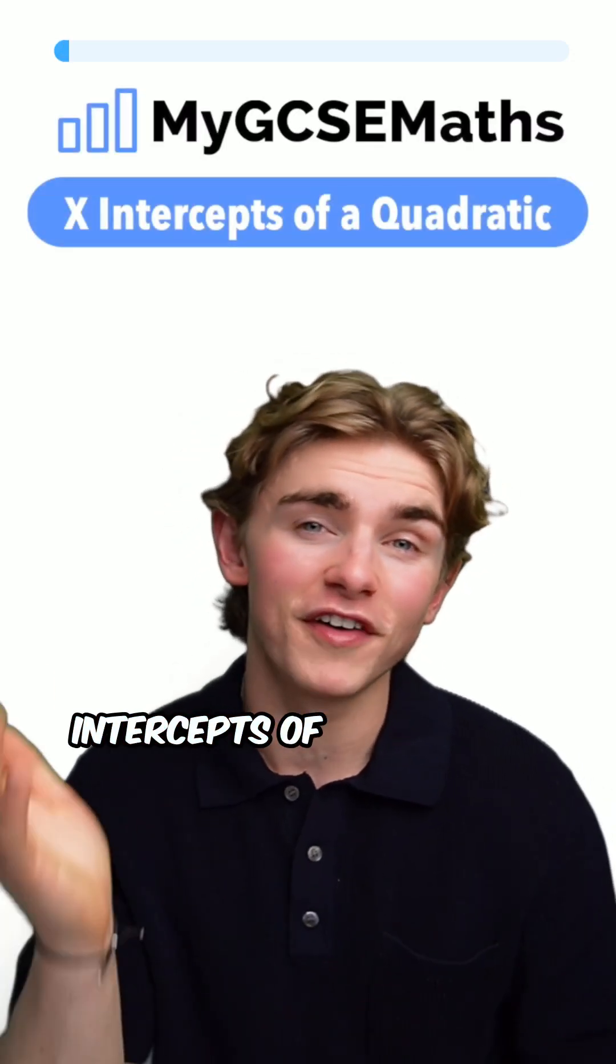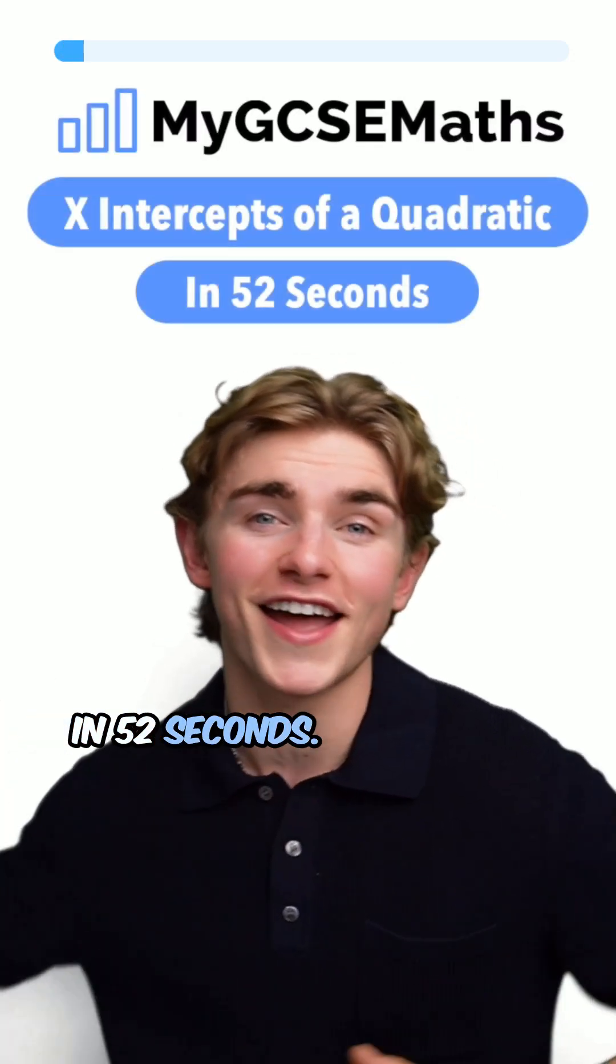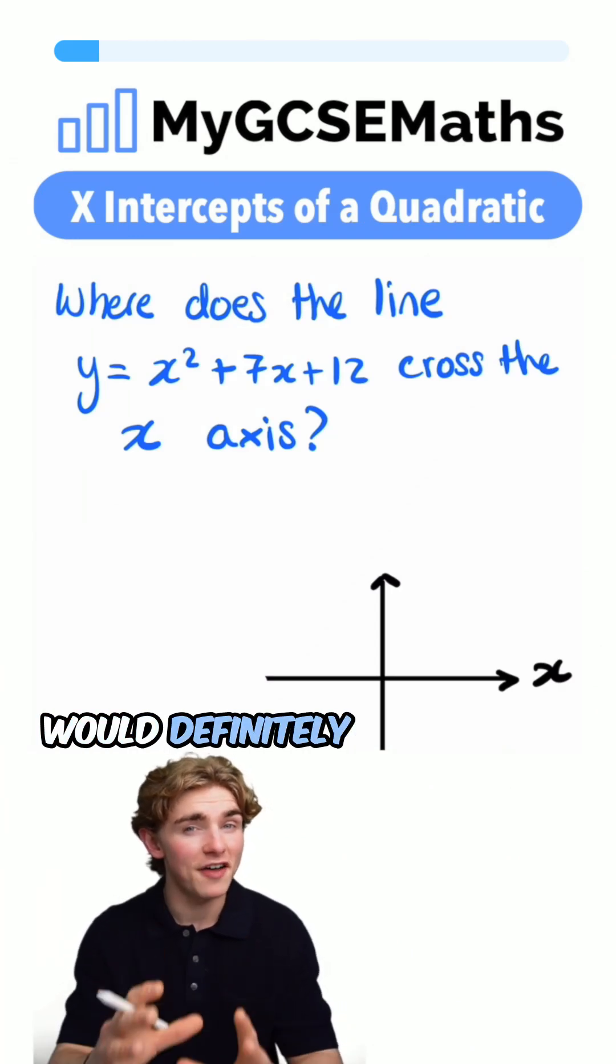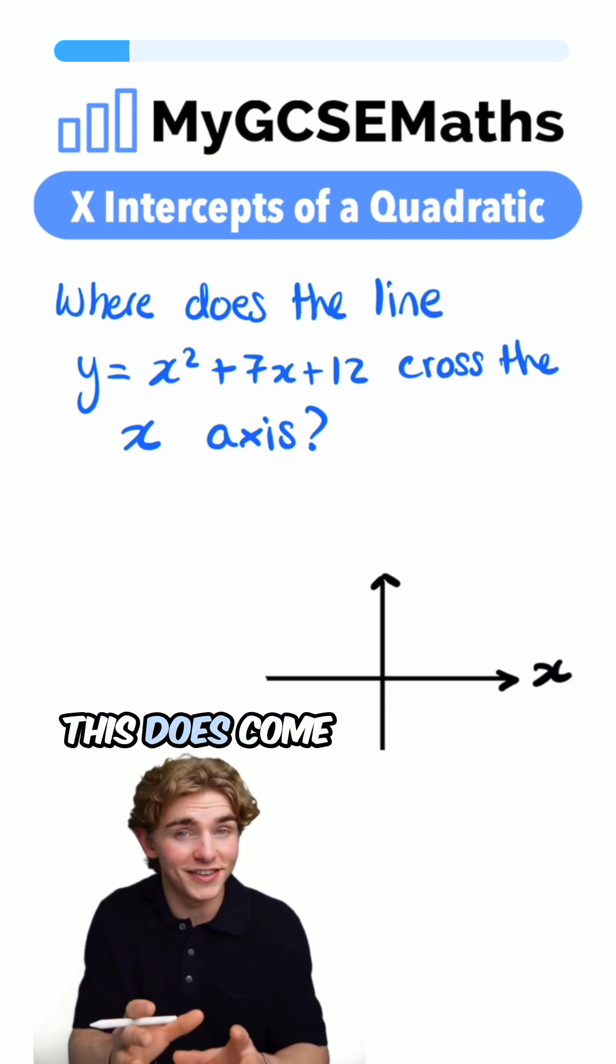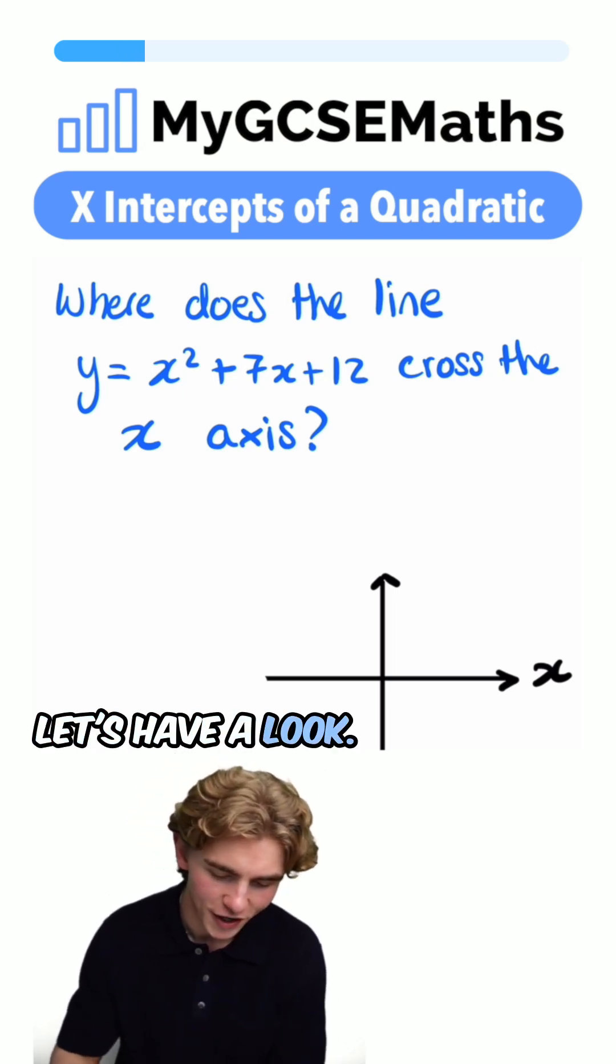GCSE maths: x-intercepts of a quadratic graph in 52 seconds. Let's go. The wording of this question would definitely trip a lot of students up, but pay close attention because this does come up a lot. Let's have a look.